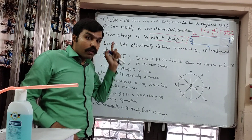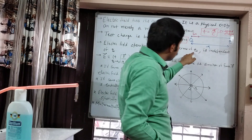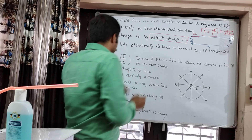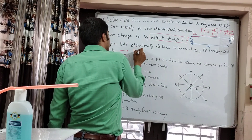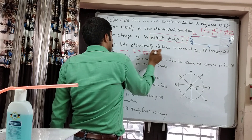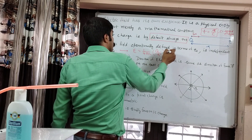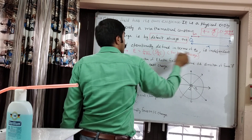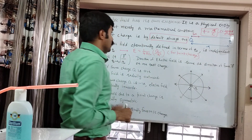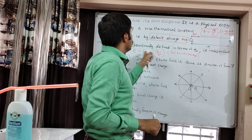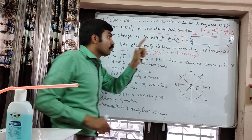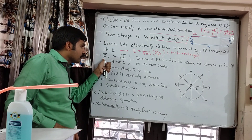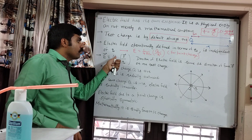Electric field, although defined operationally in terms of q₀, is independent of q₀. If you recall, the electric field due to a point charge was (1/4πε₀)(Q/r²) for a point charge. This is defined in terms of q₀ but the final expression does not carry q₀, because q₀ was cancelled in the derivation. The basic definition of electric field was: limit as q₀ approaches zero of F vector divided by q₀.